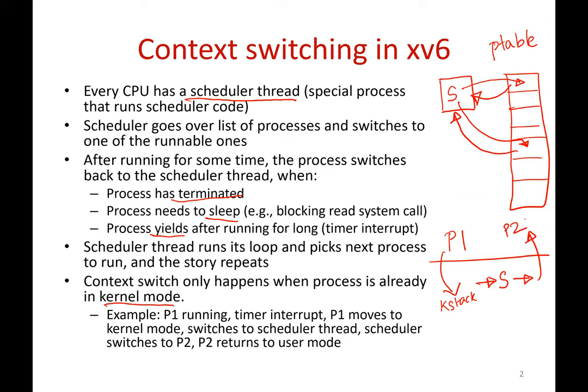If you want to switch from the user mode of process P1 to the user mode of process P2, P1 has to go into kernel mode, switch to the scheduler thread, the scheduler has to switch into the kernel mode of another process, and that process has to return to user mode. So context switching only happens in kernel mode — a user space process cannot simply jump to another user space process.